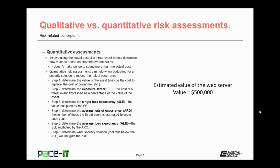So let's talk about the quantitative assessment. It involves using the actual cost of a threat event to help determine how much to spend on preventative measures. It doesn't make sense to spend more to prevent a risk from occurring than the risk is actually going to cost the business. Quantitative risk assessments can help when budgeting for a security solution to reduce the risk of occurrence. The first step is to determine the value of the asset — this value may be the cost to replace the asset or the cost of downtime, depending on what risk you're evaluating.